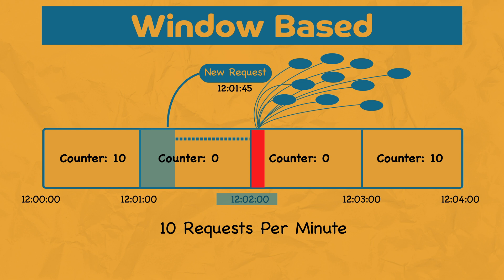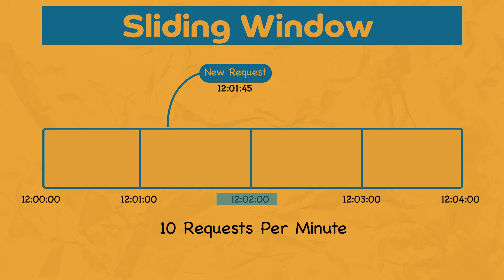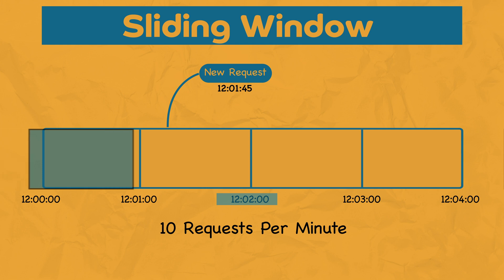There is a variation of this algorithm called the sliding window algorithm, which is very similar to fixed window except that it tackles those disadvantages. In sliding window, you design a window that slides over time. Whenever a new request comes in, it hits that window, and based on some calculation or weight calculation on the number of requests served during that sliding window period, the requests are accepted or rejected. For system design interviews, you don't need to know this in detail, but just know that sliding window exists and tackles the disadvantages found in fixed window algorithms.